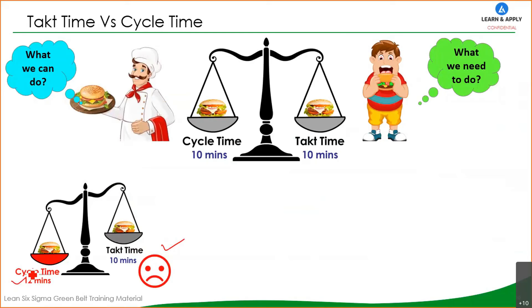If the takt time is 10 minutes and through some improvement project we reduce the cycle time from 12 minutes down to 8 minutes, then our cycle time of 8 minutes is much less than the takt time — that is a desirable condition. So if your cycle time is more than the takt time, we need to work on our processes to reduce the cycle time.